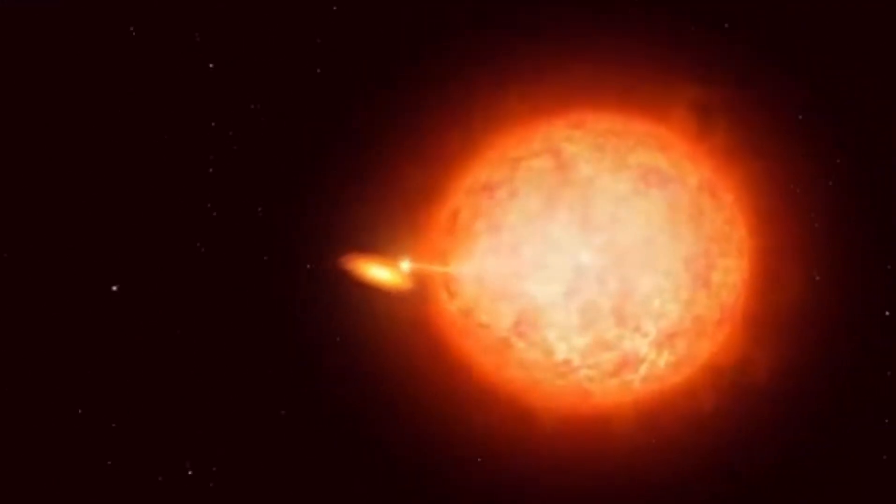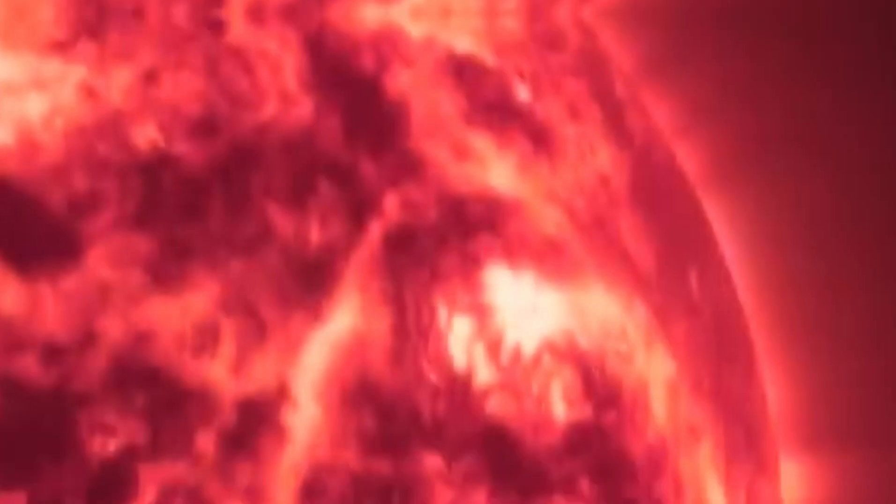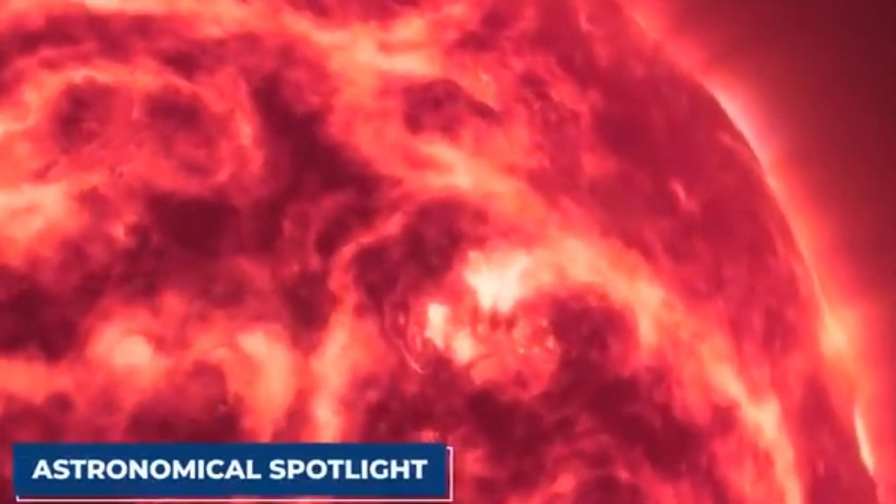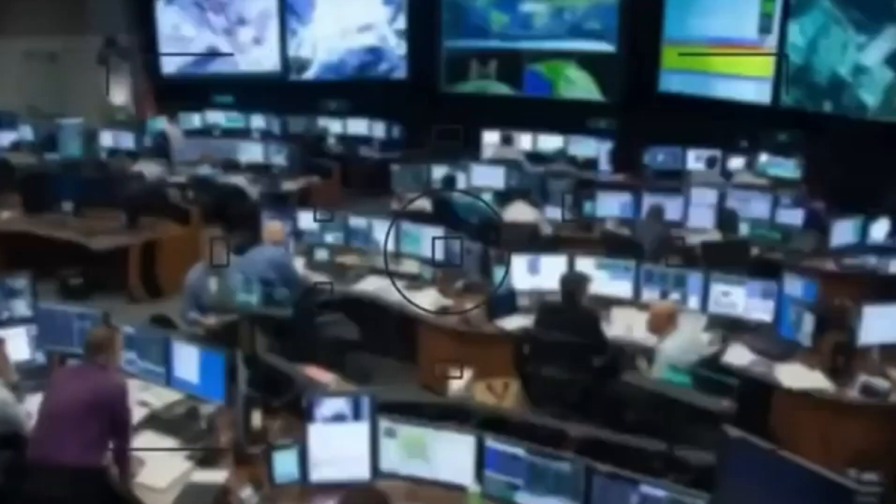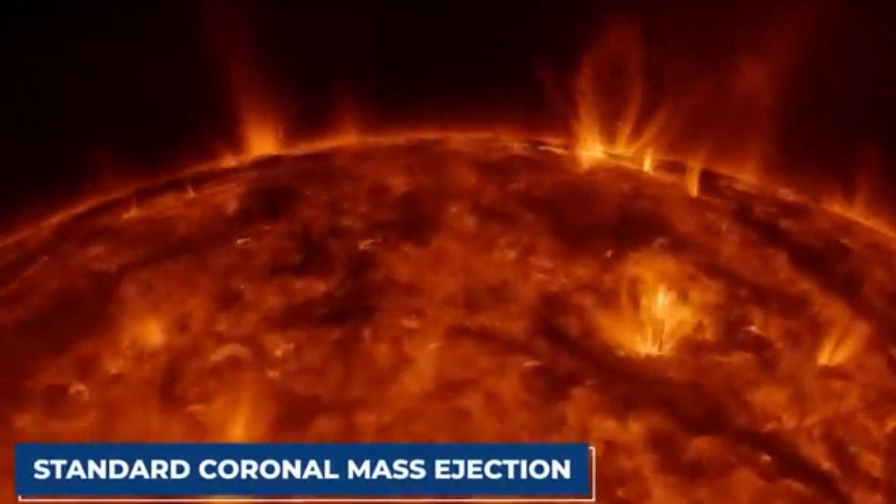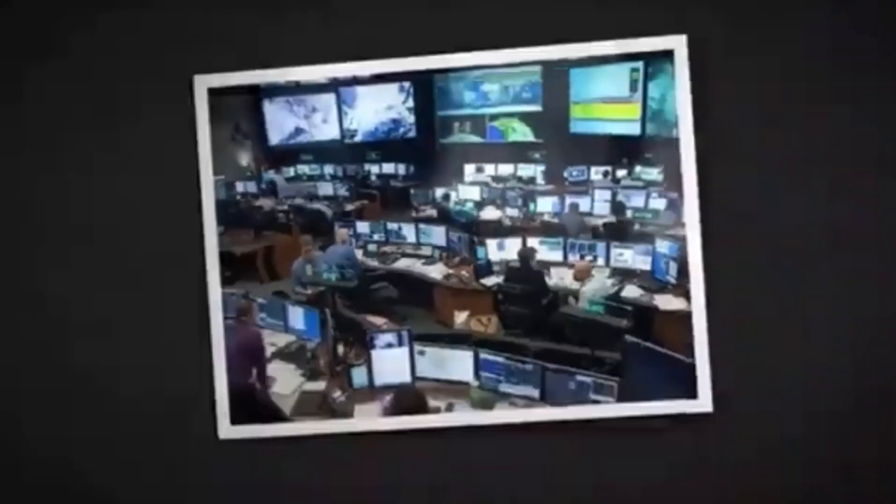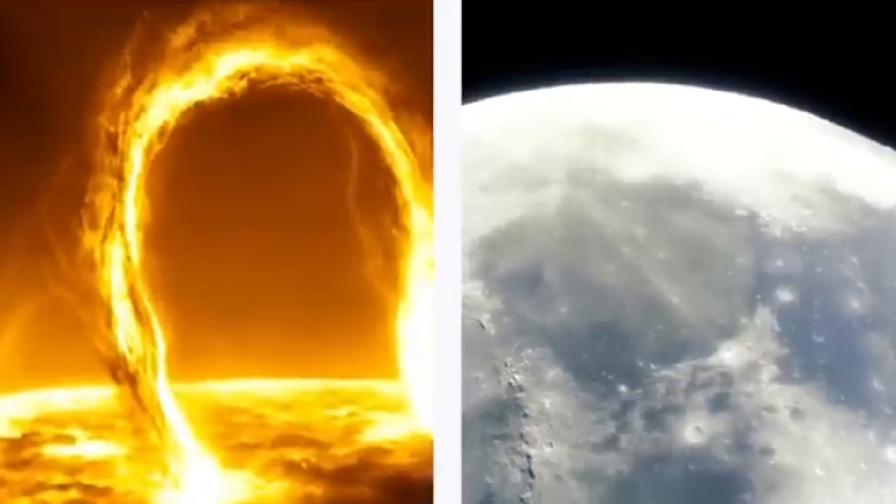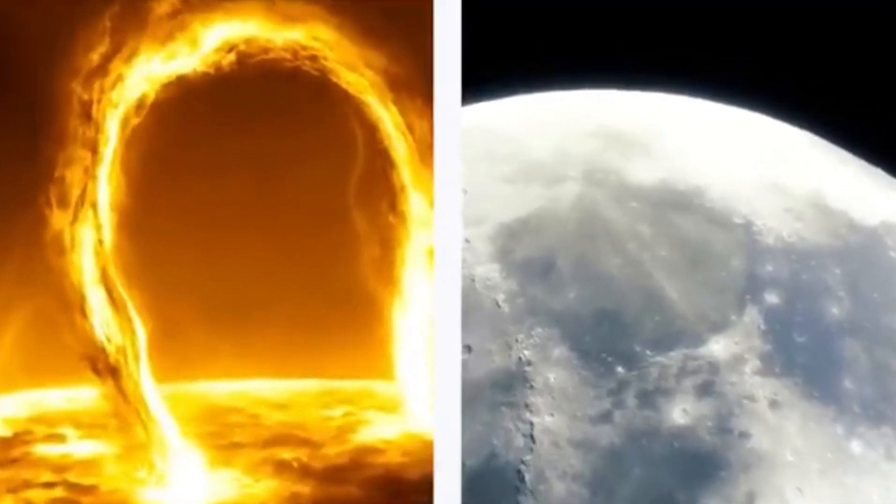Type 2 supernovae, on the other hand, result from the gravitational collapse of a massive star's core. Betelgeuse, as a red supergiant nearing the end of its life, has drawn significant attention due to its recent dimming episodes. This variability, while characteristic of such stars, sparks speculation about an impending supernova. Astronomers observed Betelgeuse's dimming and attributed it to these potential precursor events, leaving the world watching and wondering what might come next in this star's final act.